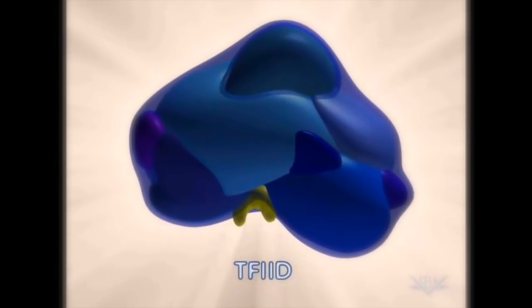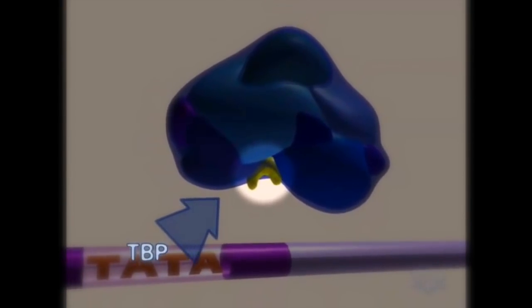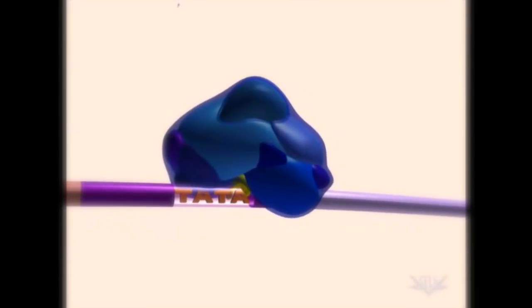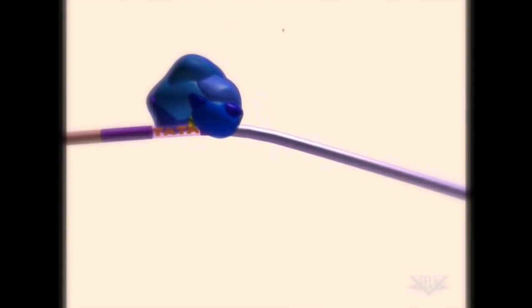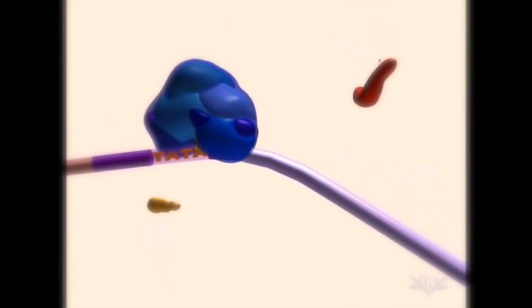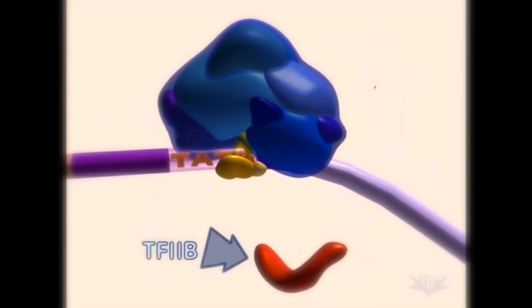Several complexes, known as transcription factors, are required for successful transcription. The first is TF2D, the largest of the general factors. A component of this factor, TBP, binds to the DNA using the TATA box to position TF2D near the transcription initiation site. Other transcription factors, including TF2A and TF2B, then attach.